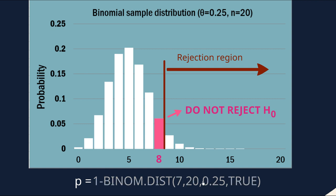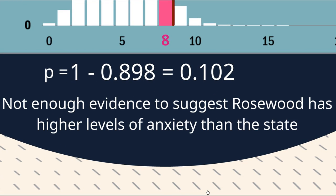But this is the way I did it. And in doing so, we found that it's 0.102. So our p-value associated with this sample was 0.102. Being greater than 0.05, we know we do not reject. Thus, not enough evidence to suggest Rosewood has higher levels of anxiety than the state.